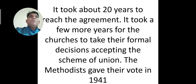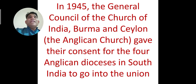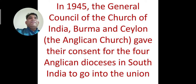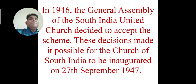It took about twenty years to reach the agreement, and a few more years for the churches to take their formal decisions accepting the scheme of union. The Methodists gave their vote in 1941. In 1945, the General Council of the Church of India, Burma and Ceylon — the Anglicans — gave their consent for the four Anglican dioceses in South India to join the union. In 1946, the General Assembly of the South India United Church decided to accept the scheme. These decisions made it possible for the Church of South India to be inaugurated on 27th September 1947.